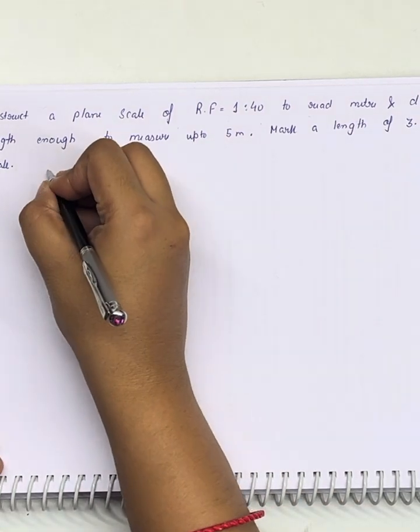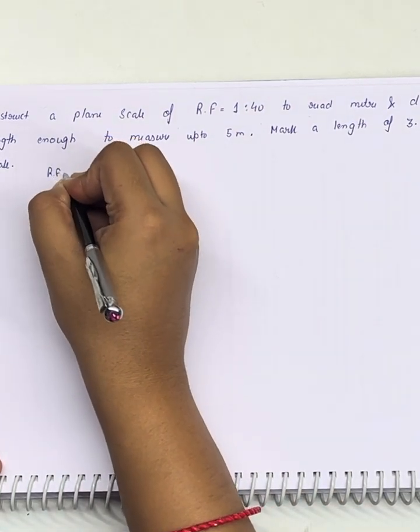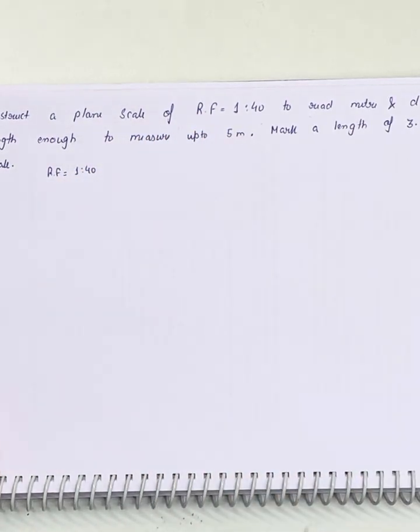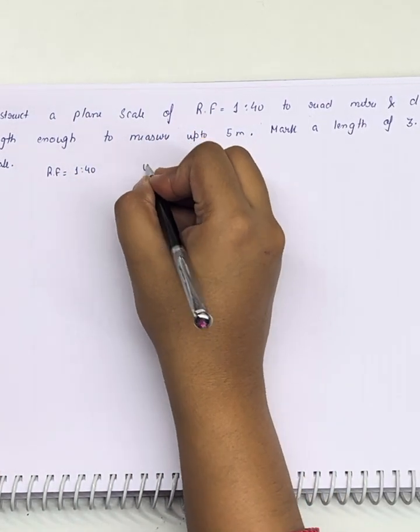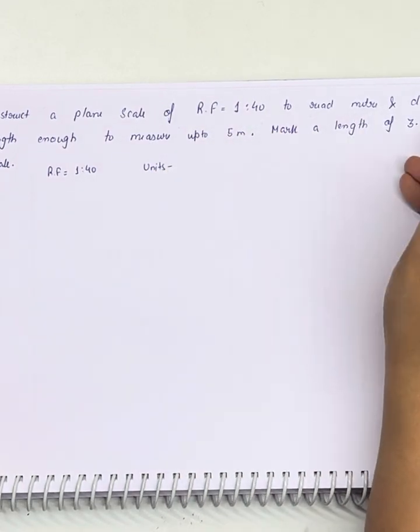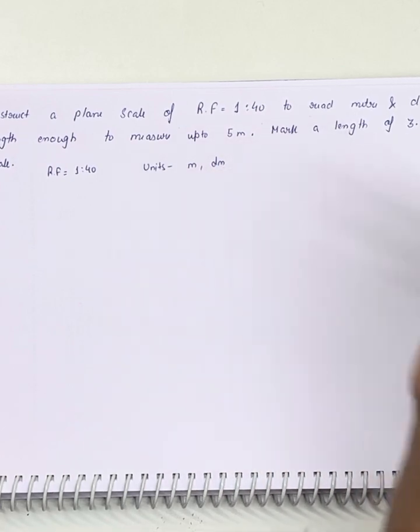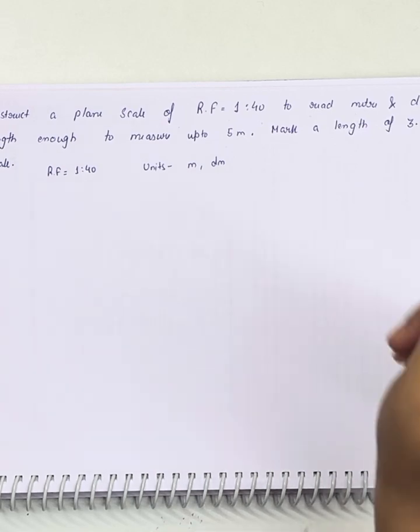First, we will point out certain things: What is the RF of the scale? RF is 1 is to 40. Second, what are the units we need to draw on the scale? Units are meter and decimeter. And the maximum length is 5 meters.